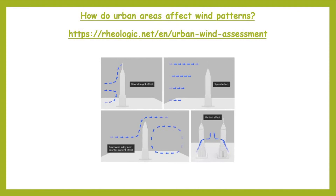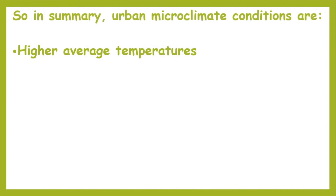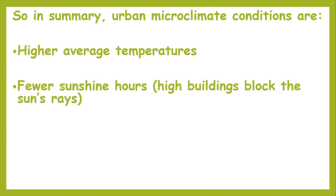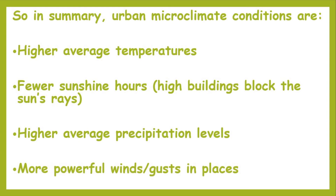The last part of the lesson is to take what we've learned, summarise it, and apply it to how it would affect residents in an urban area. Urban microclimate conditions include: higher average temperatures; fewer sunshine hours — early morning or late evening when the sun is low, high buildings block the sun's rays, which is not great for balconies or gardens; higher average precipitation levels; and in some areas, more powerful winds and high wind speeds and gusts. Pause the video and write down that summary.